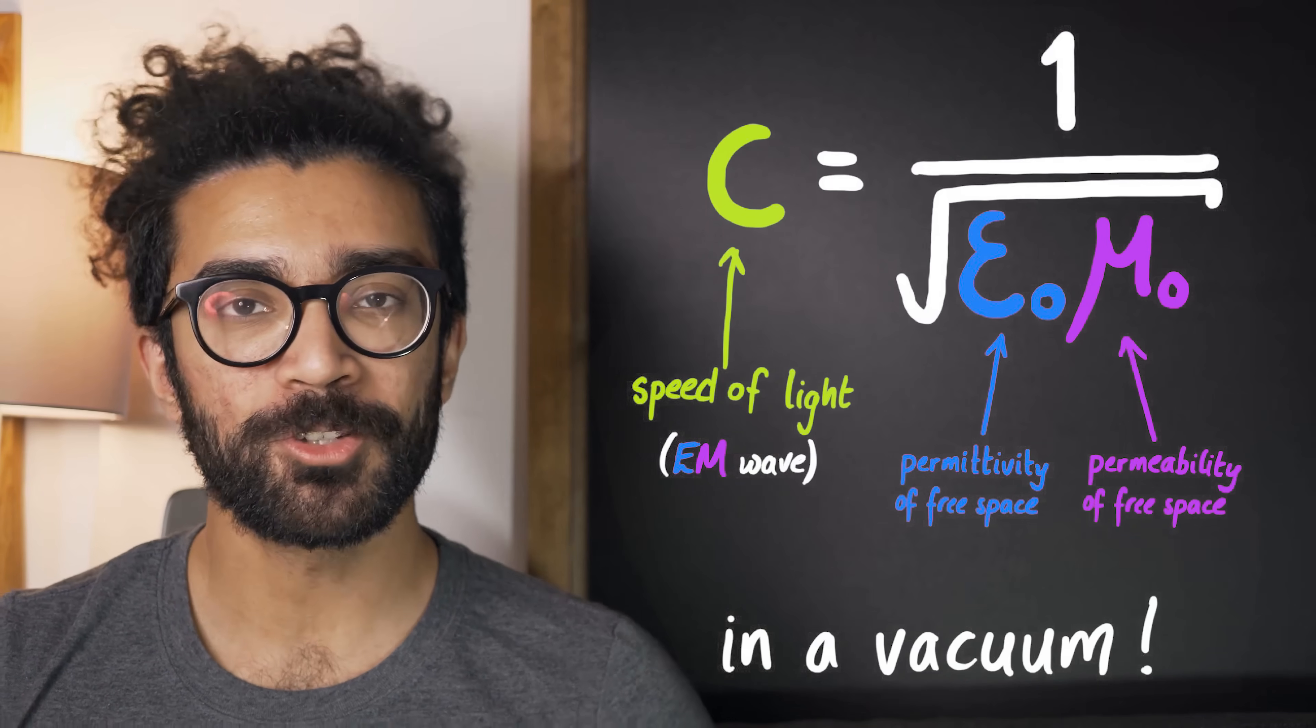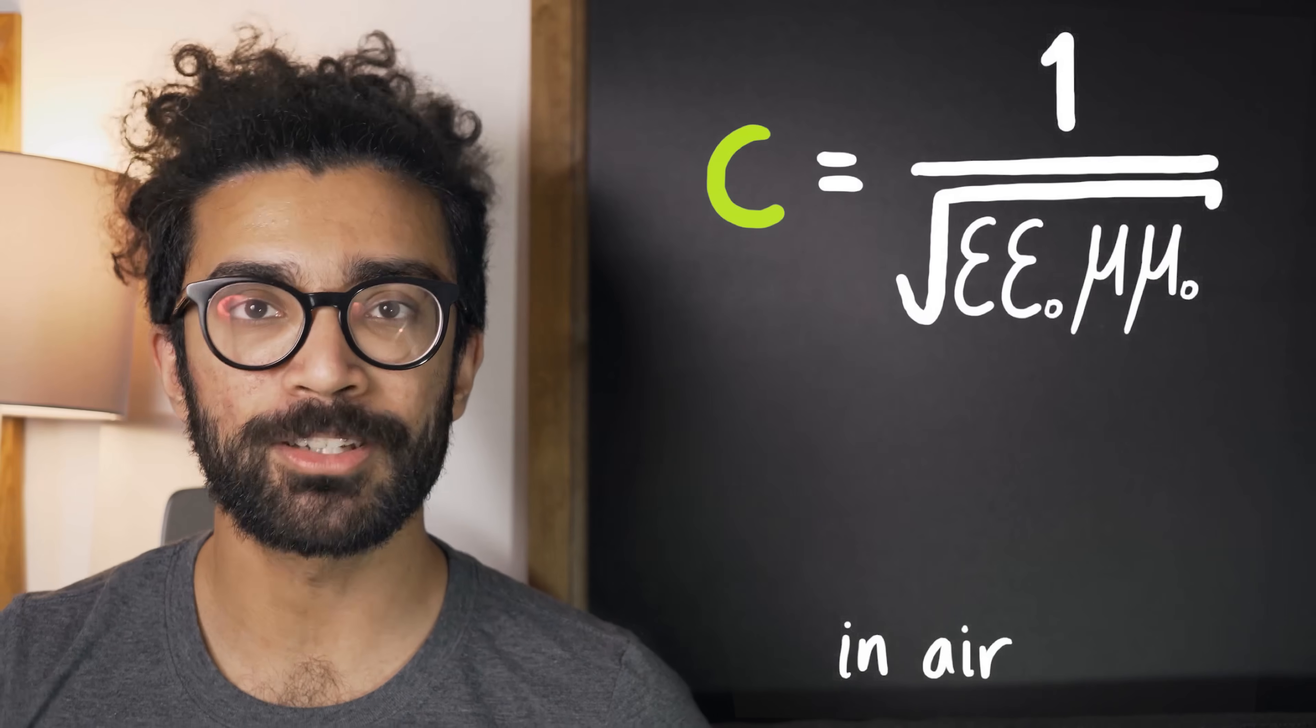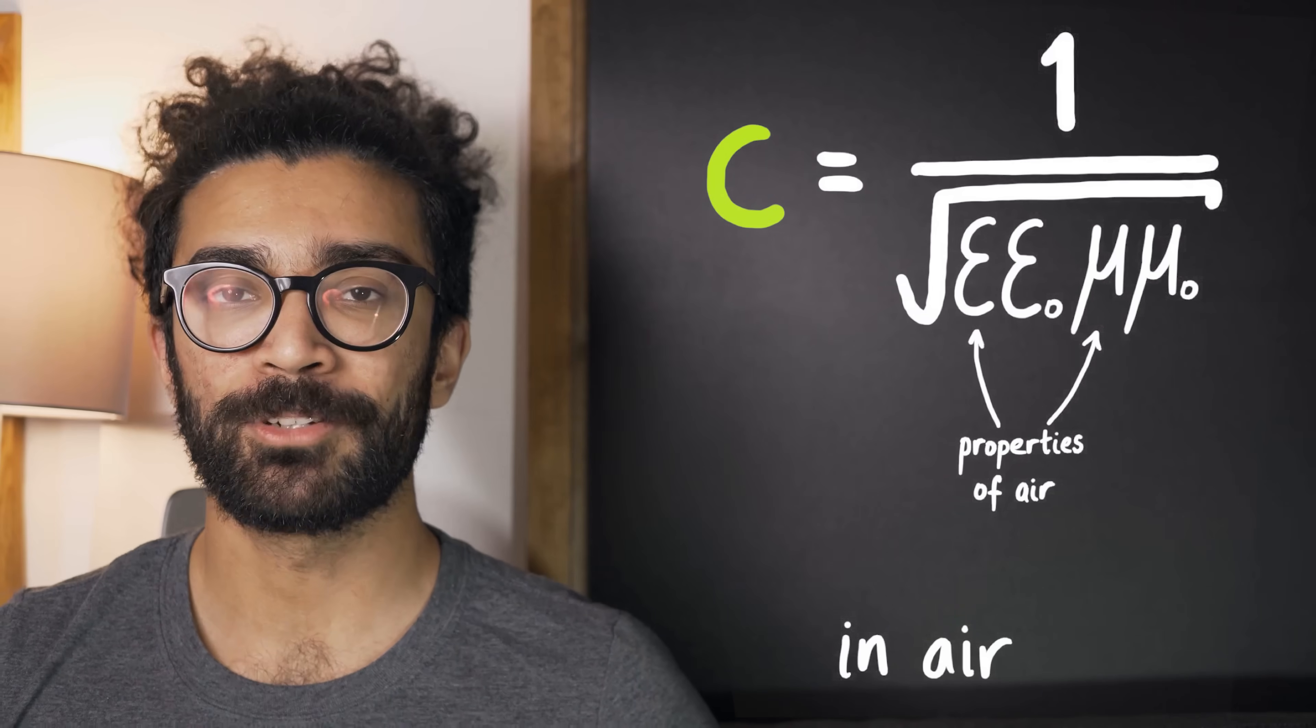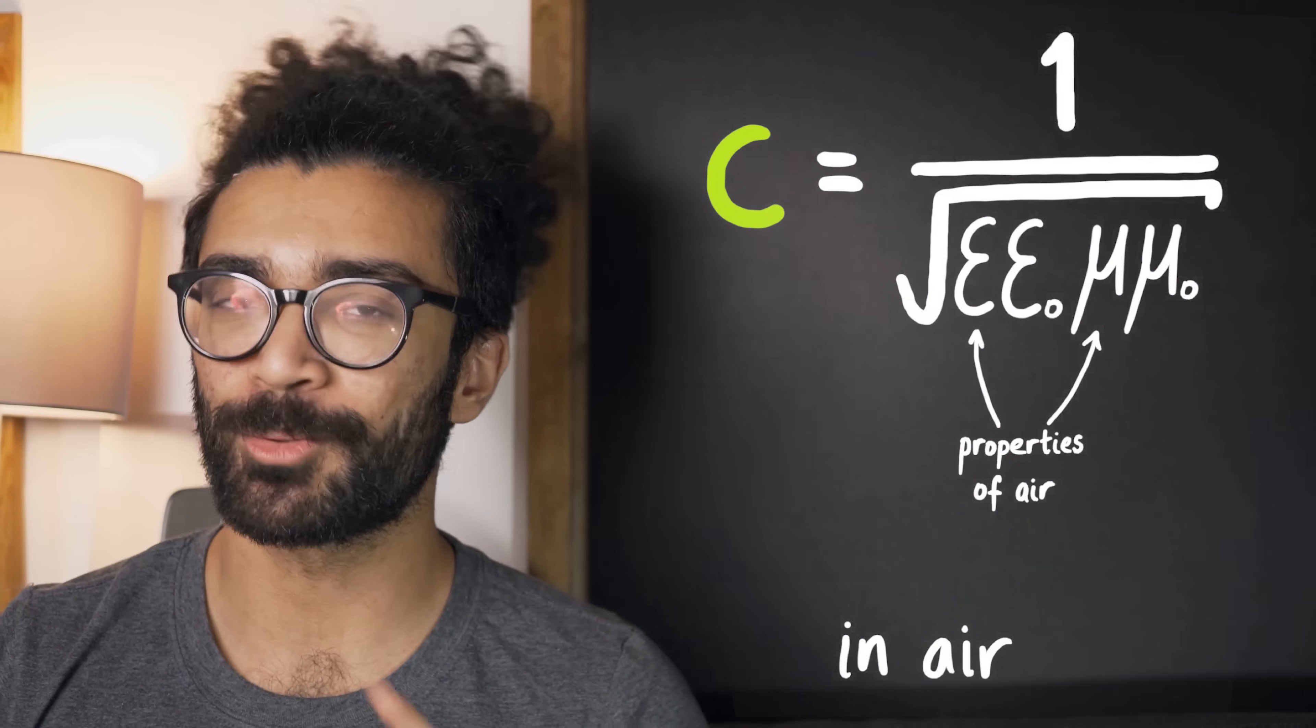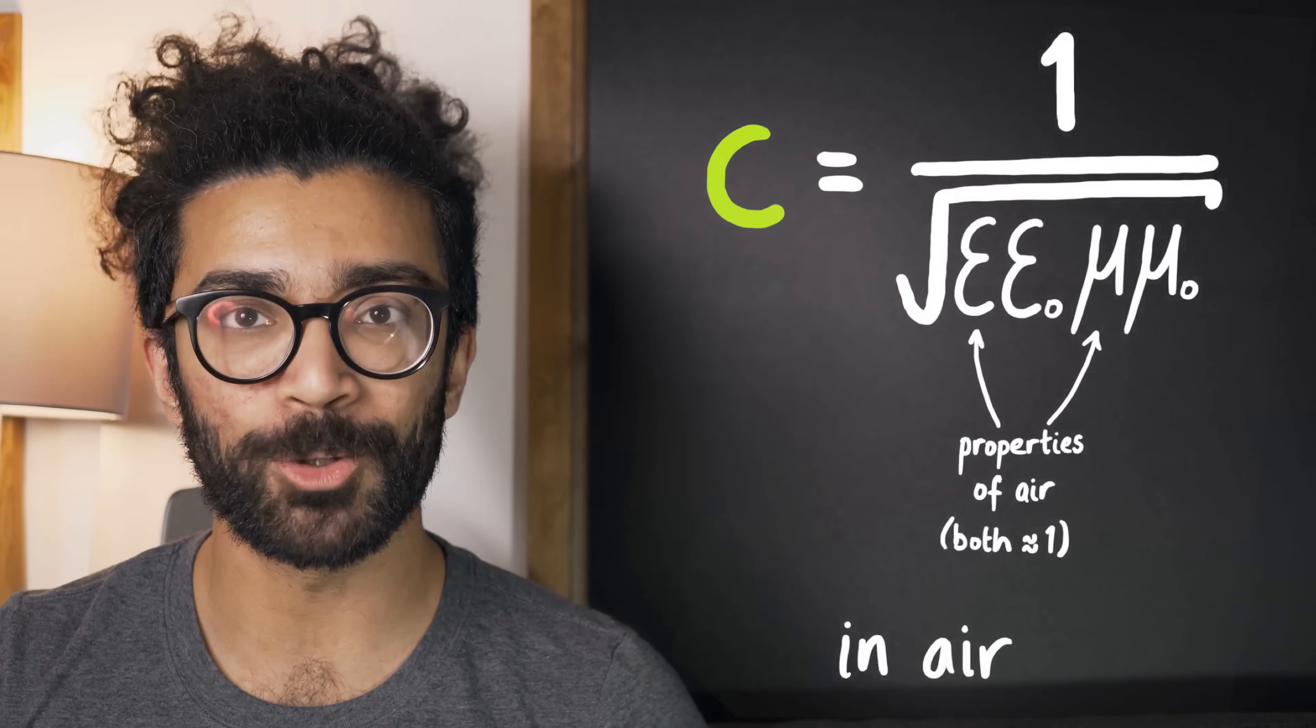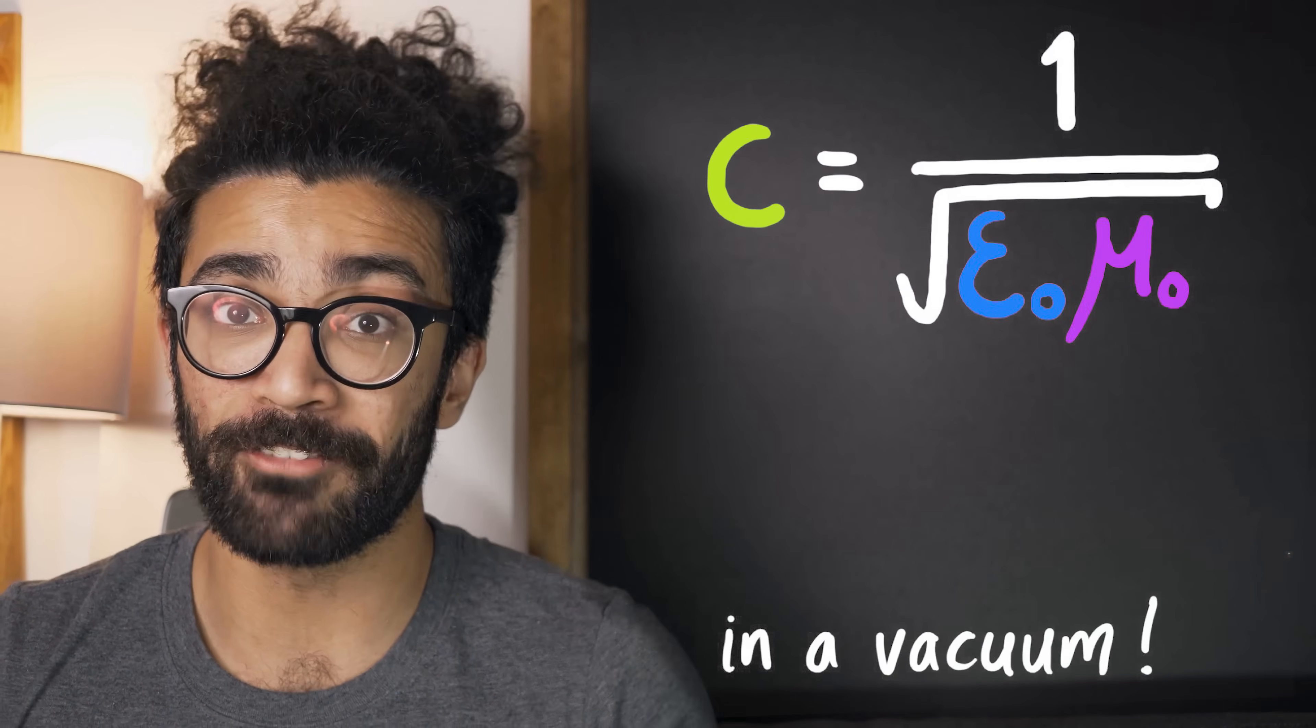But the equation that we require for those scenarios is actually not much more complicated. All we have to do is to include something about the properties of the medium we're considering. And of course, when we happen to consider an electromagnetic wave traveling through air, then the difference in speeds between air and vacuum is not very big at all. So much so that we can ignore the difference entirely and we just treat it as traveling at the speed of light in vacuum.